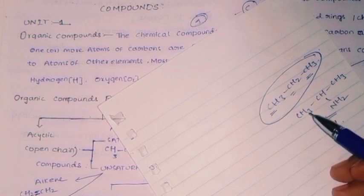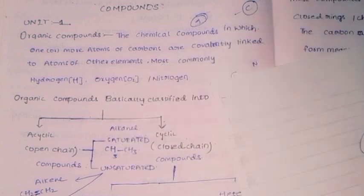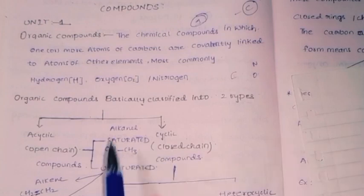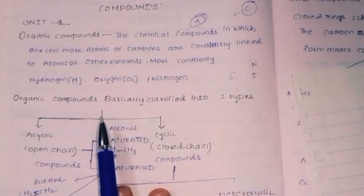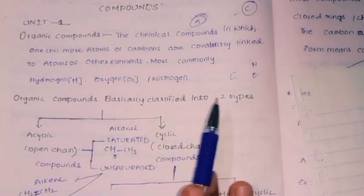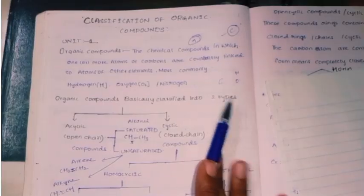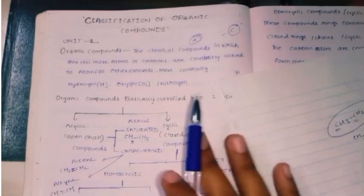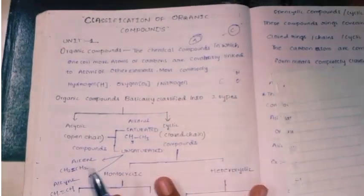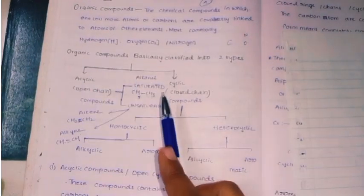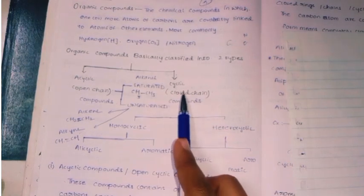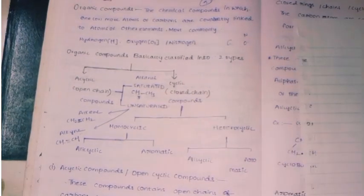When it comes to classification, organic compounds are basically divided into two types. First is acyclic, and second is cyclic.